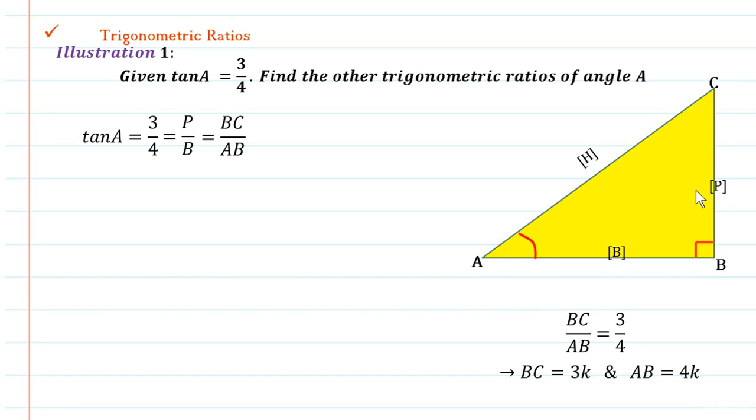If the third side AC is known, then we know the length of all the sides and we can easily calculate the T ratios.